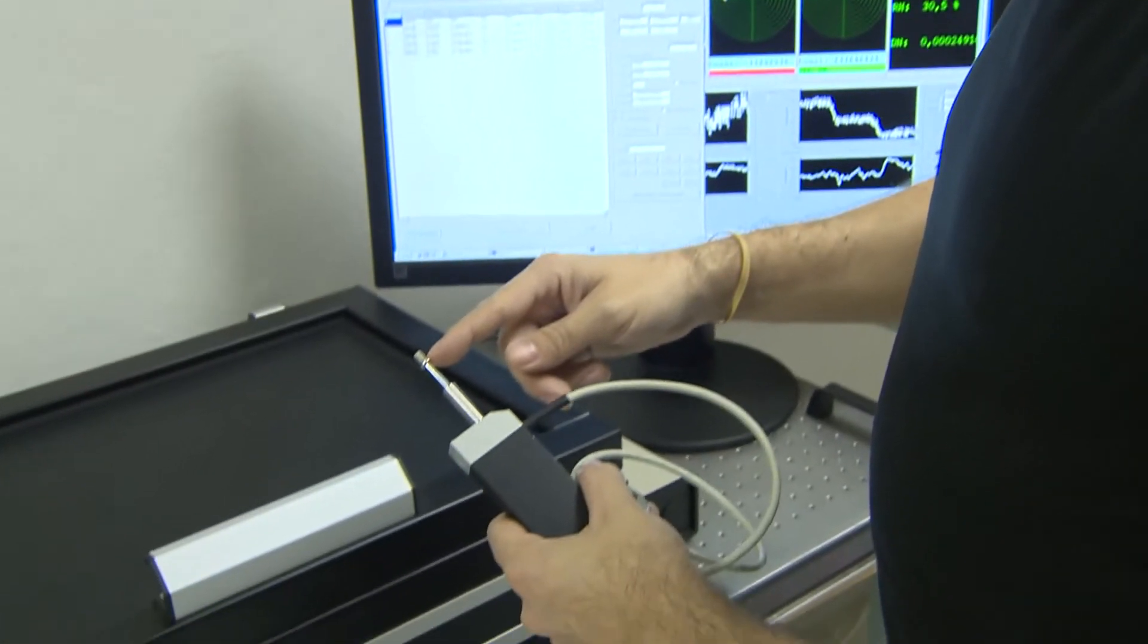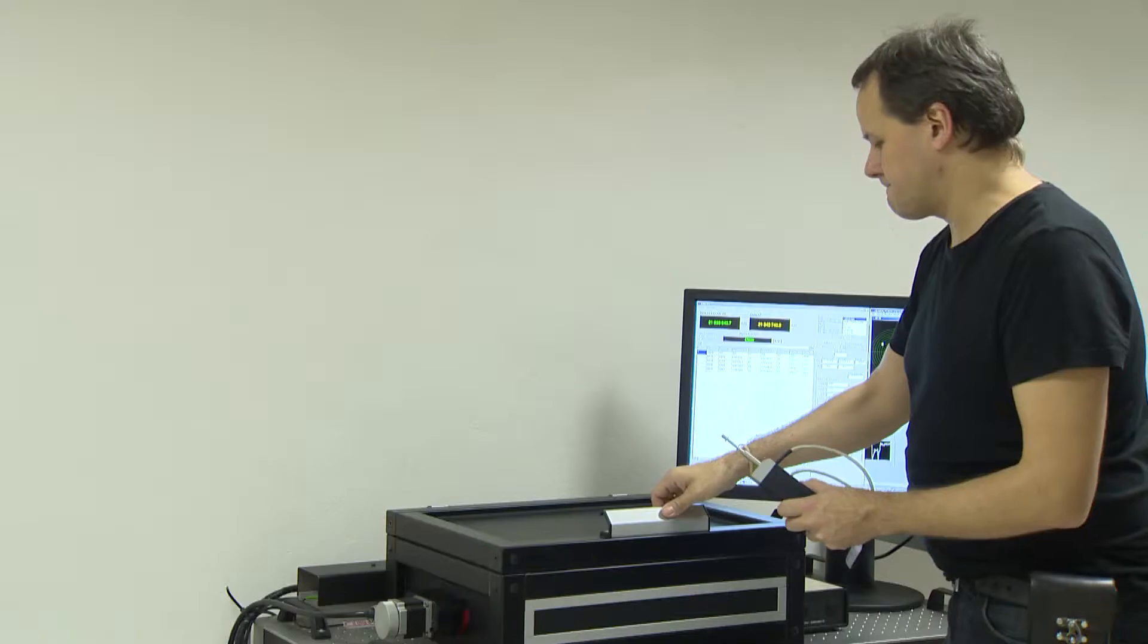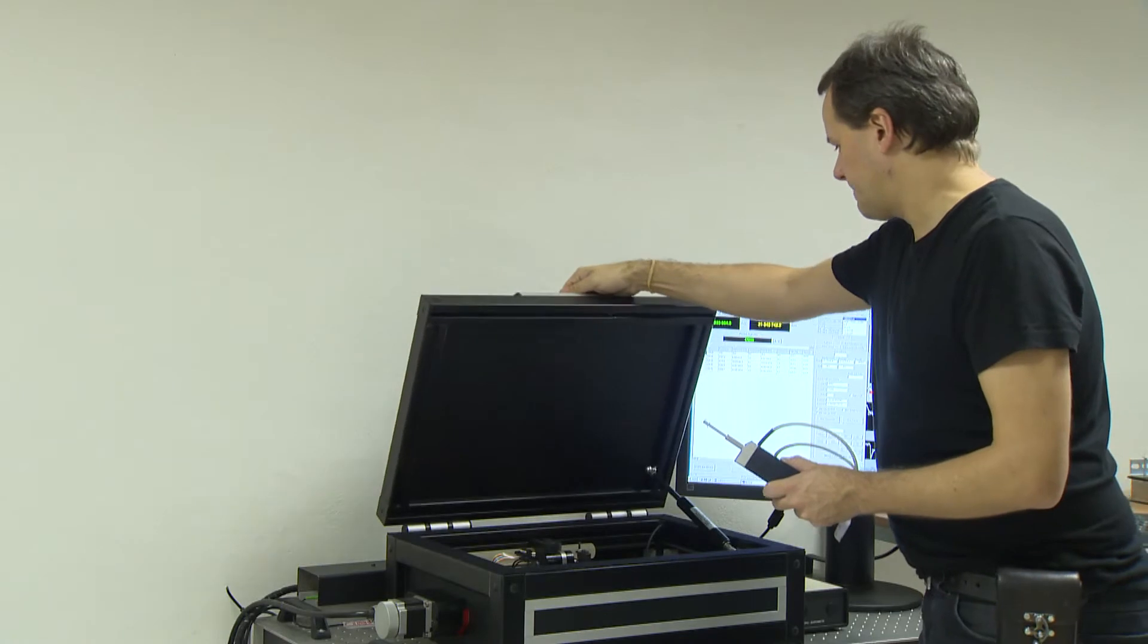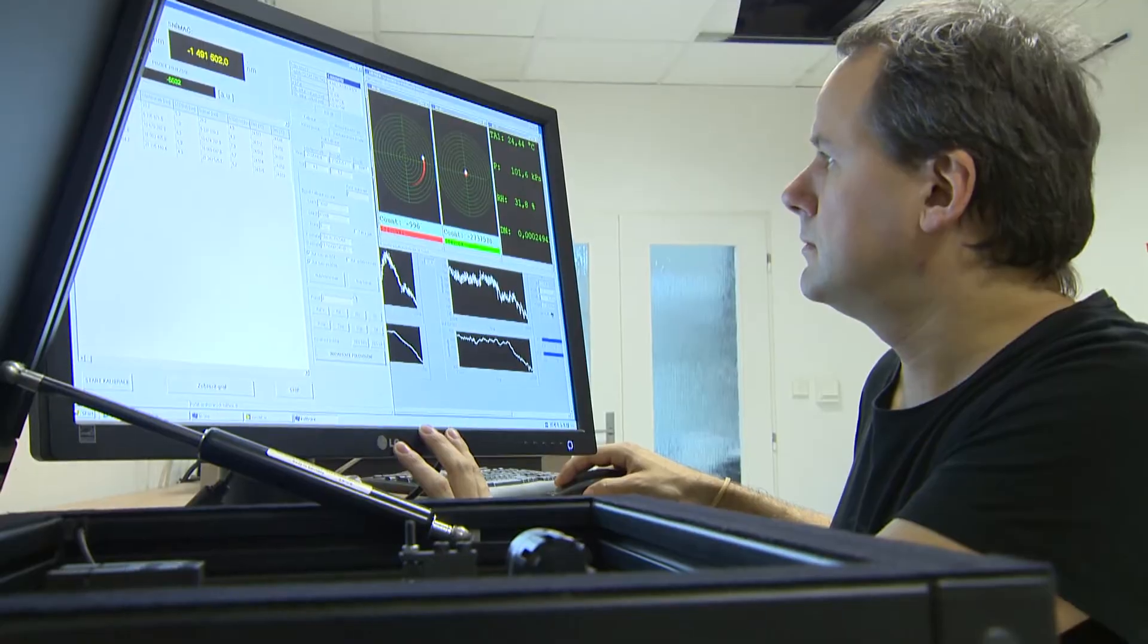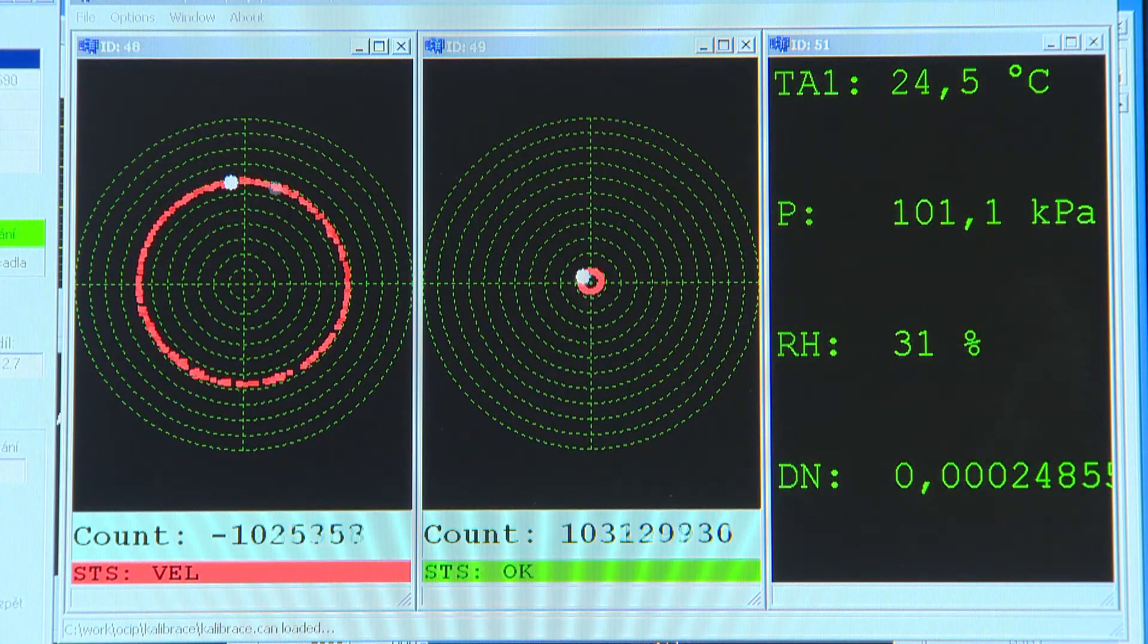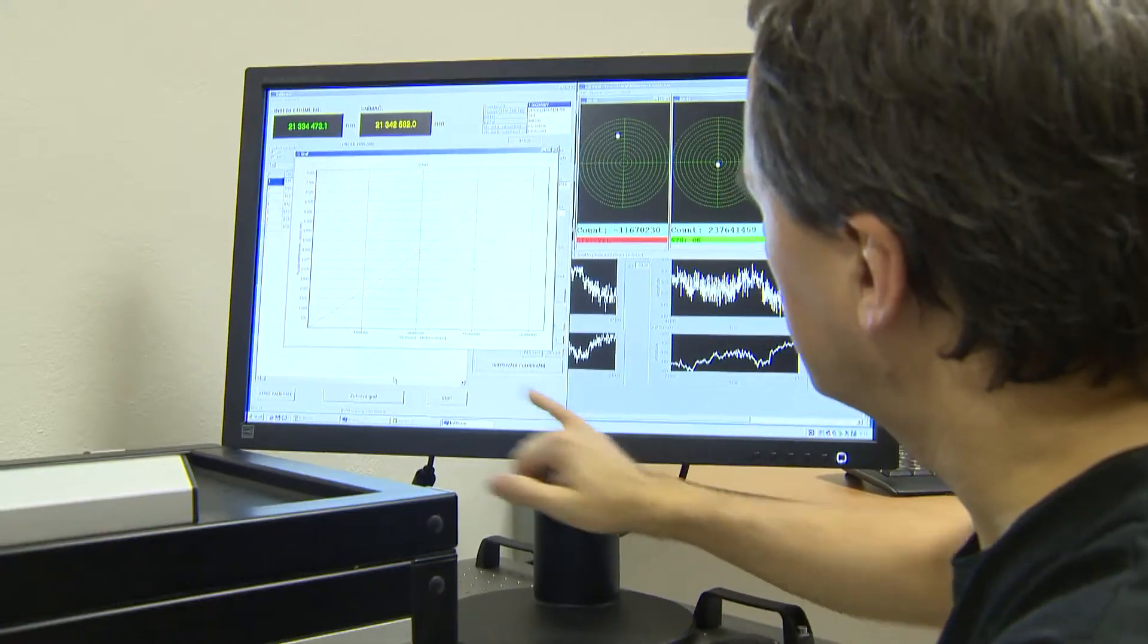In our institute, we've developed a specialized laser length meter, the so-called nano comparator, which can calibrate even the most accurate sensors used, for example, in automotive industry. For this unique device, we won the second media award at the International Engineering Fair in Bruneau.